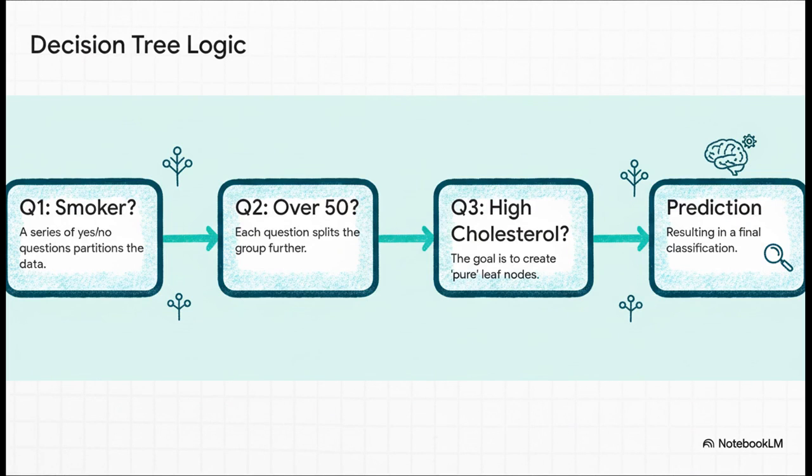Next up is the decision tree. This one's basically like a game of 20 questions. The algorithm figures out the best series of yes or no questions to ask to slice up the data. It's like a flowchart. Does the patient smoke? Yes. Are they over 50? Yes. Do they have high cholesterol? No. And it follows that path all the way down to a final prediction.